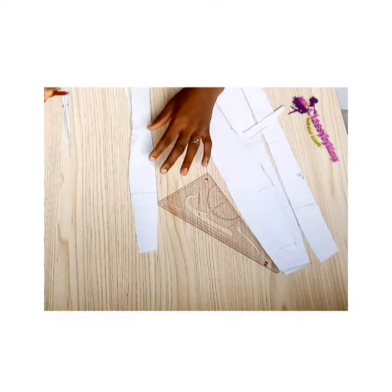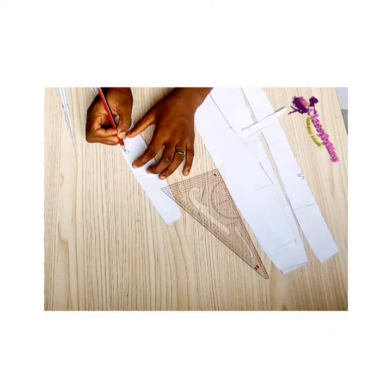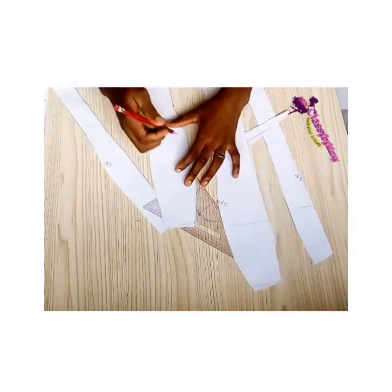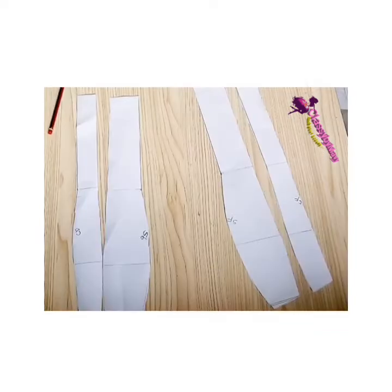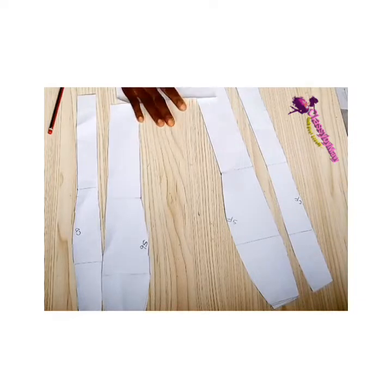Also for the back, we have gotten our center back, CB, and our side back. So next, we'll be adding our gores. We'll be doing it one pattern after the other. Let's start with the side front.